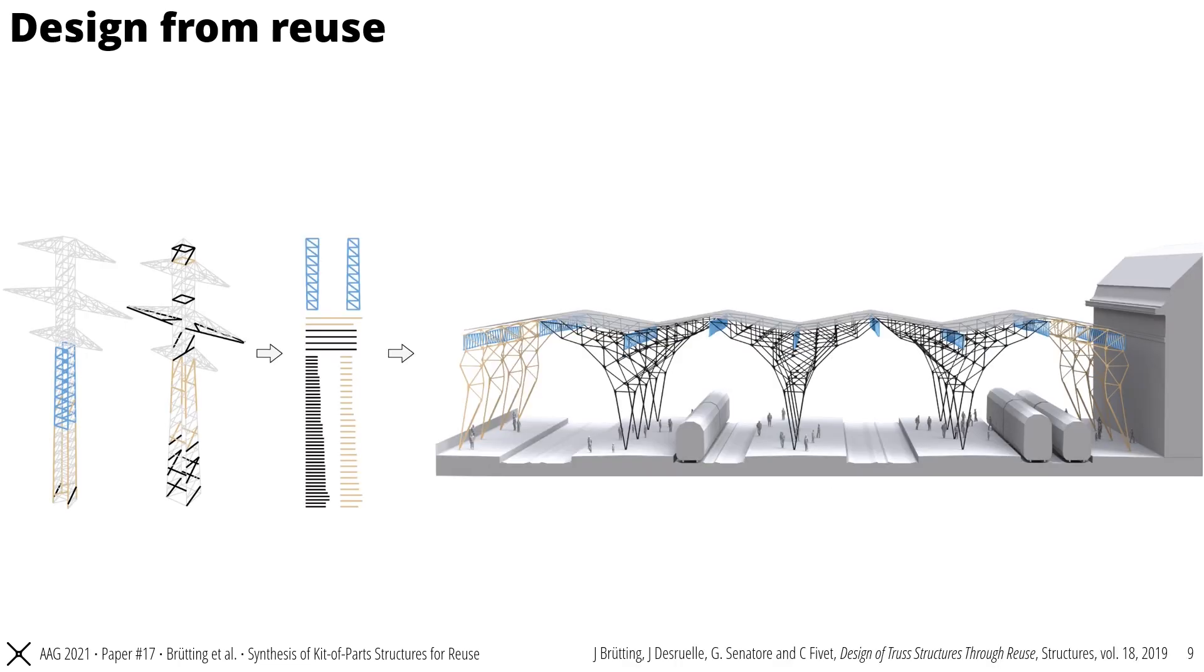One strategy to reuse structural components is to source them from existing but obsolete buildings and structures. Like shown in this example, one could reuse the elements of old electric pylons to design new structures, like this train station roof. This approach we would call design from reuse.